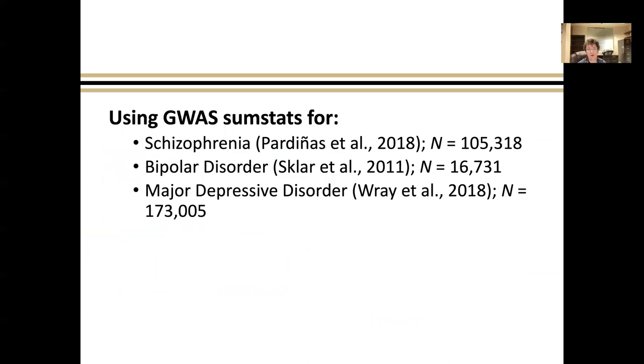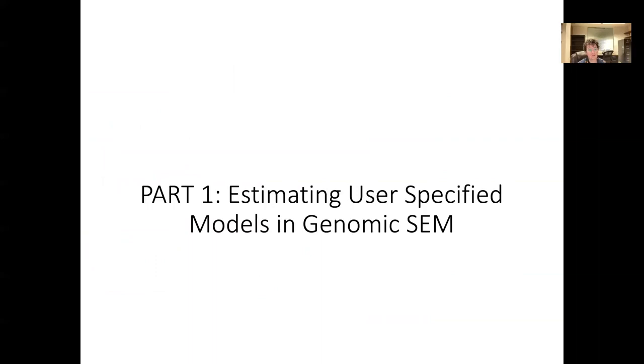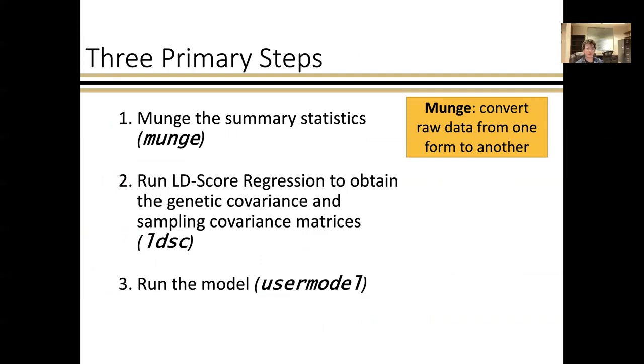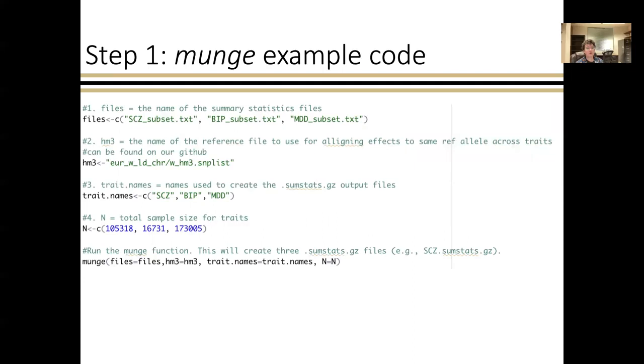Moving on to how to estimate a user-specified model. This takes three primary steps. The first is munging the summary statistics. The second is running LD score regression, and the third is using that output from LD score regression to run the model that you specify. Mung is a general procedure to format the summary stats in the way that LD score regression is expecting. For this practical, we're using a subset of 10,000 SNPs for schizophrenia, bipolar, and major depression. In general, you can download and use a full set of summary stats on a personal laptop, but for the purpose of the practical we're restricting file sizes.